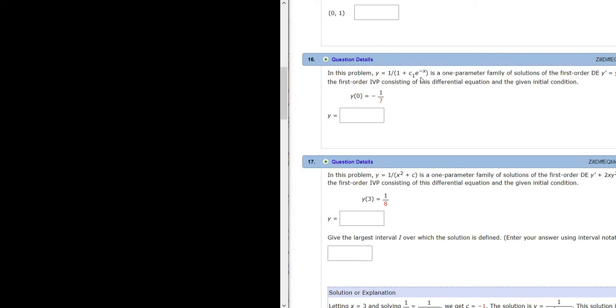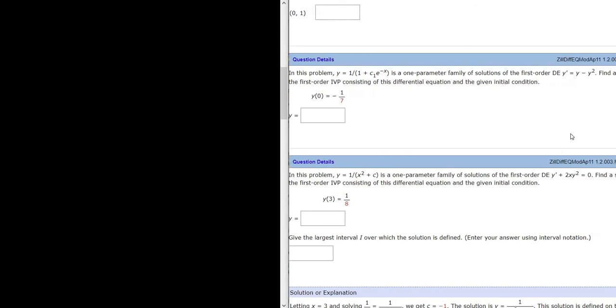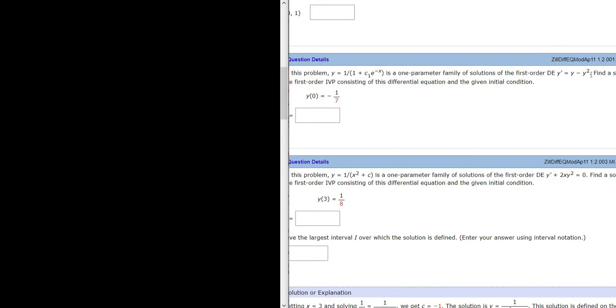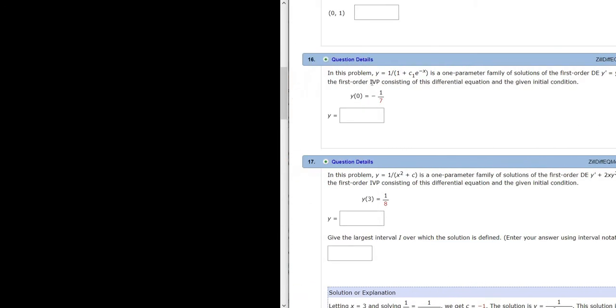In this problem, y equals 1 over 1 plus c1 e to the negative x is a one-parameter family of solutions of the differential equation y prime equals y minus y squared. Find a solution of the first-order initial value problem (IVP) consisting of this differential equation and the given initial condition.